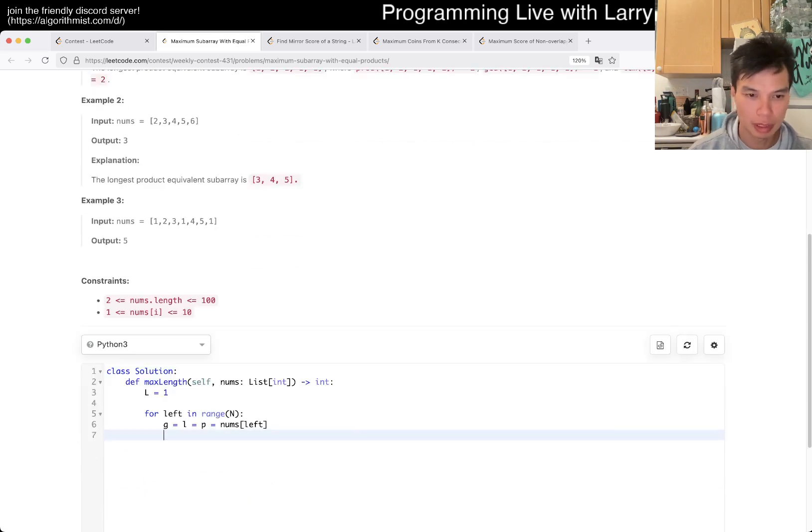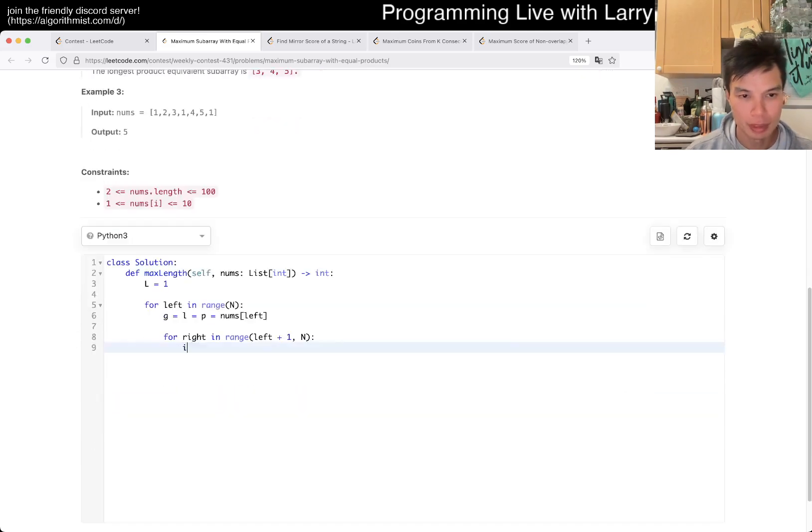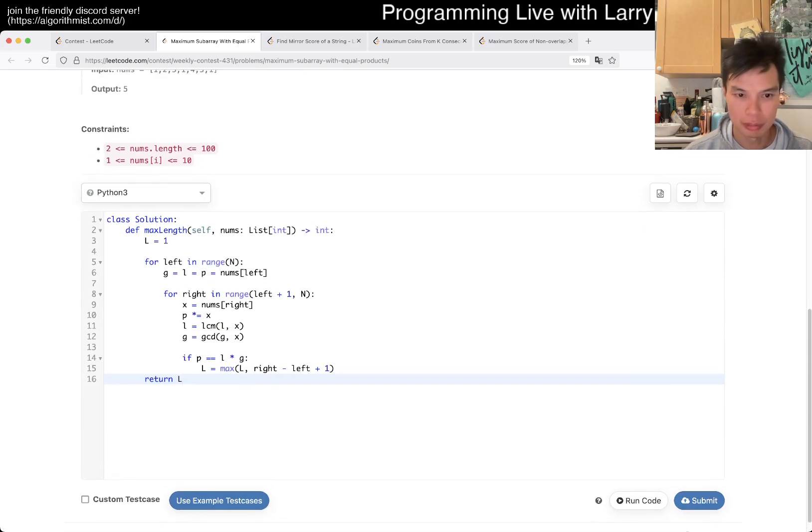Alright, and then now, p times equals x, l equals LCM of l and x. If p equals l times g, then answer equals max of... I don't know why I'm saying it out loud, but something like that.